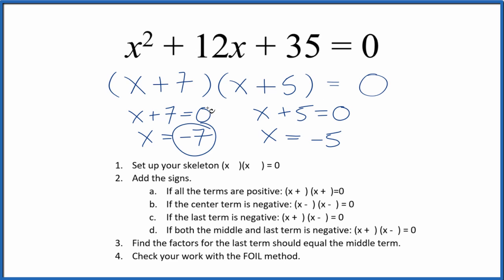So if we put negative seven in for x, we do the math, all of this will equal zero. Likewise, if we put negative five in for x, do the math, this equals zero. So we did this part correctly.